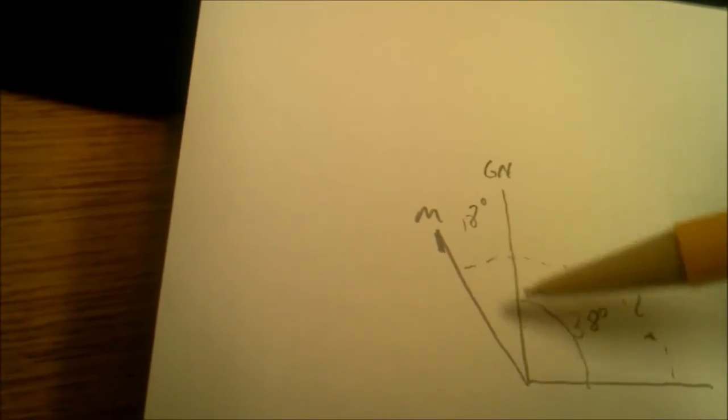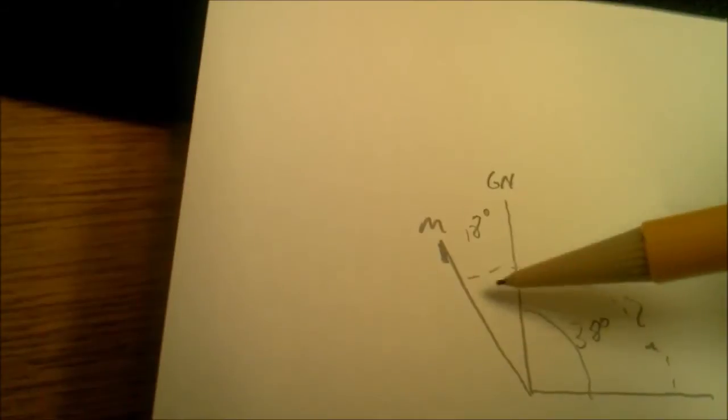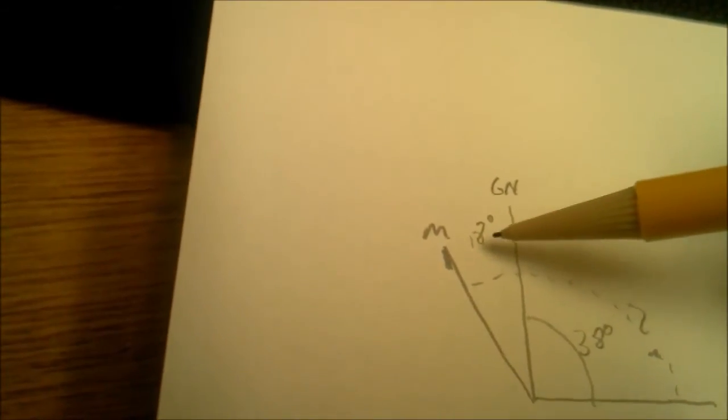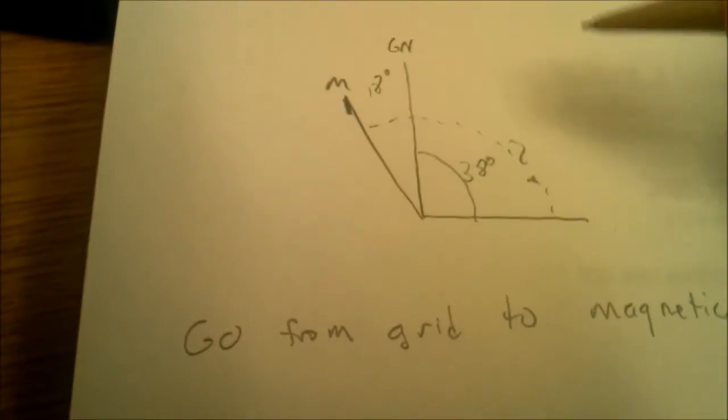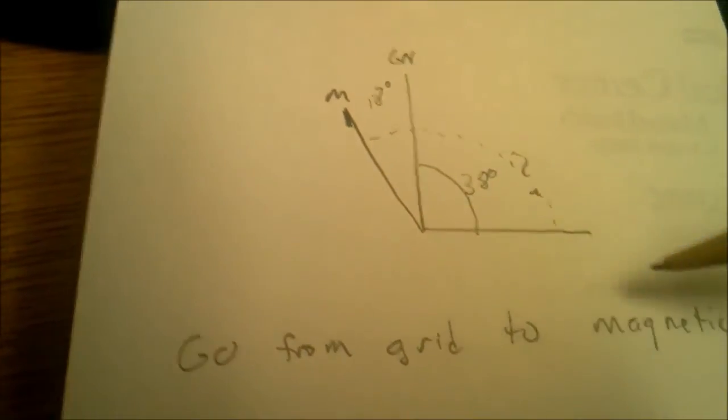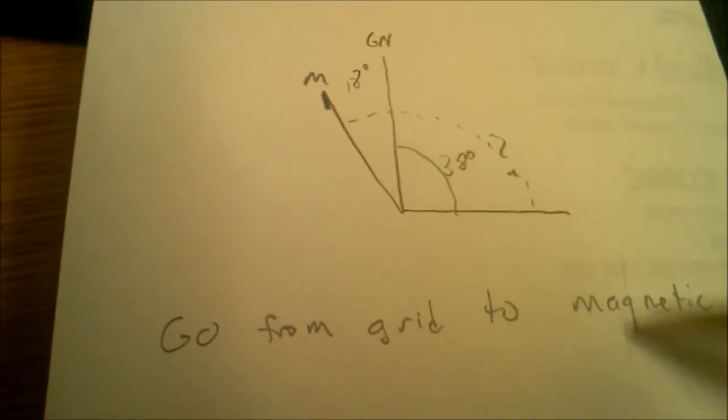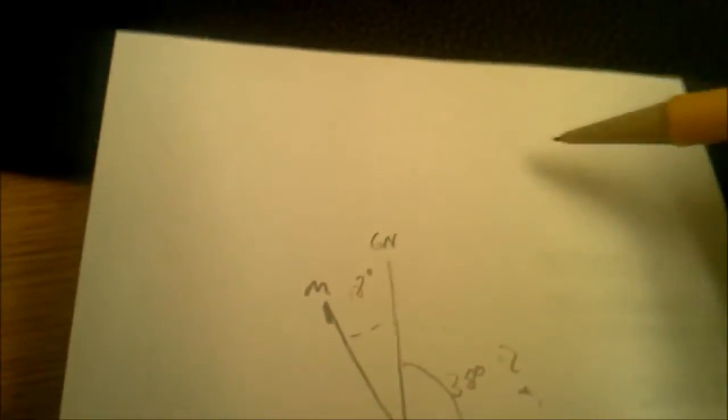What I'm going to do to achieve this number, to get the magnetic number, I'm going to add 18 to 38 degrees. And again, this is going from grid to magnetic. That's important. You have to try not to get those screwed up.